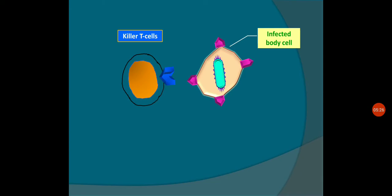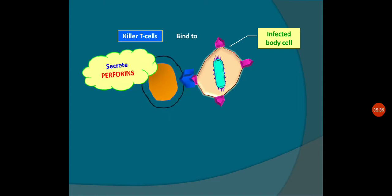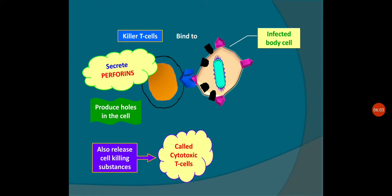When the killer T-cell comes in contact with an infected body cell, it binds with it and kills by secreting perforins. Perforins are chemical substances secreted by killer cells that produce holes on the surface of the bacteria or infected cell. As a result, it also releases cell-killing substances. This is called the cytotoxic T-cell activity.